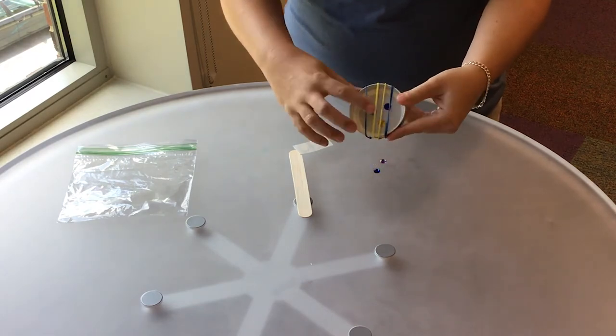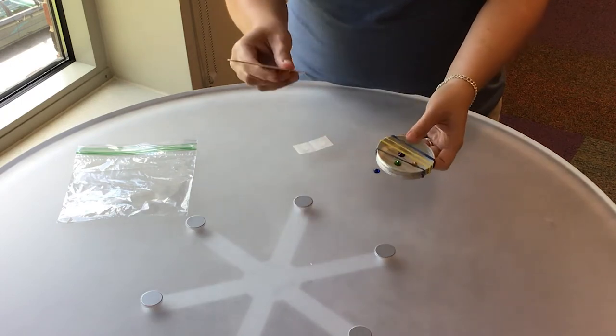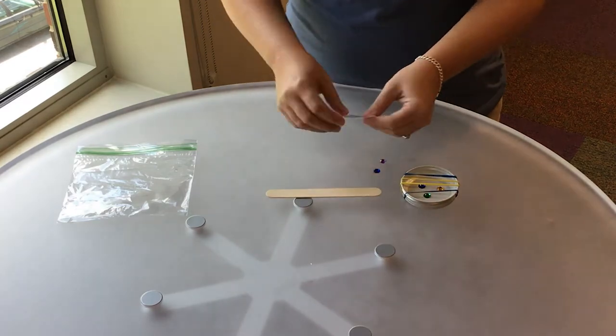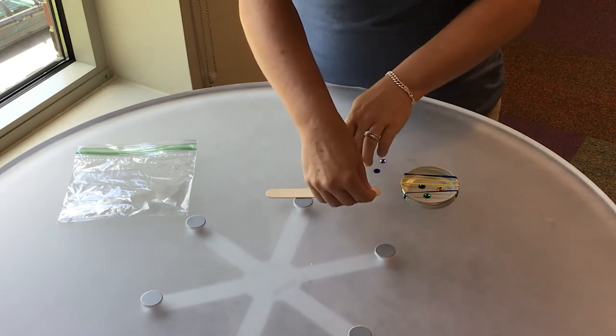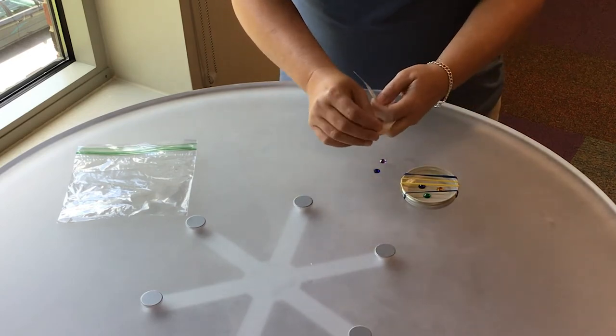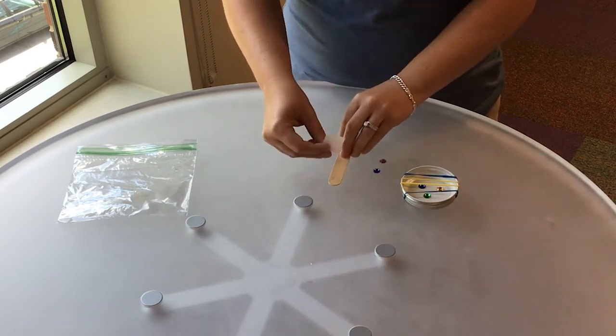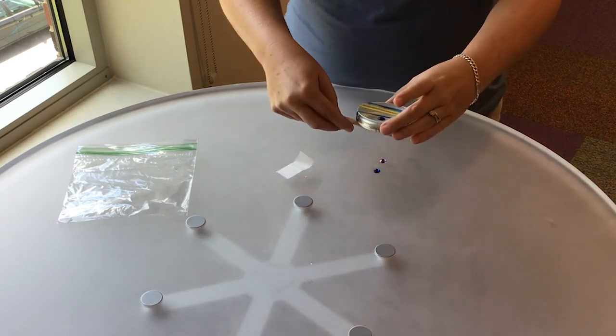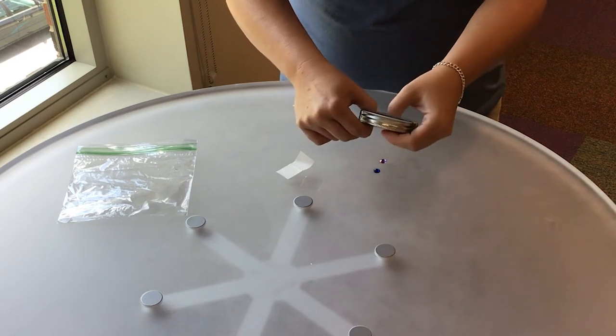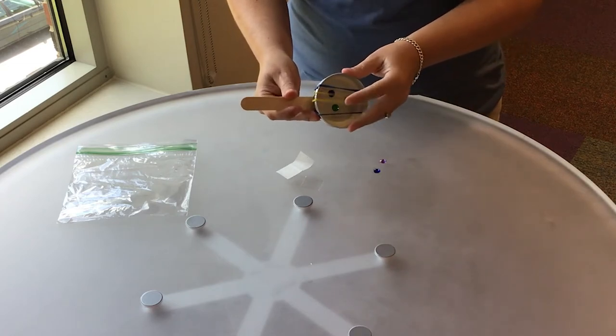So once the rubber bands are on you can see how it's becoming a banjo and then you take the craft stick along with the glue dots that are provided and apply the glue dot onto the craft stick just like this. And then you can attach the lid so that it's secure and now you have your banjo. I hope you all have fun with this.